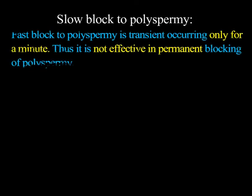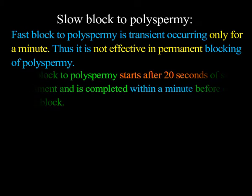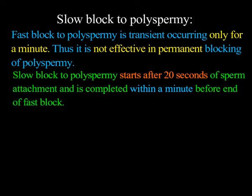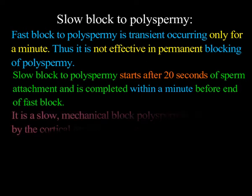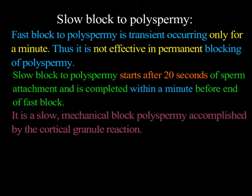Second, the slow block to polyspermia. The fast block to polyspermia is transient, occurring only for a minute, and thus it is not effective in permanently blocking polyspermia. The slow block to polyspermia starts after 20 seconds of sperm attachment and is completed within a minute, before the end of the fast block. It is a slow mechanical block accomplished by the cortical granule reaction.